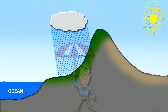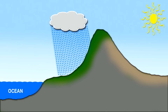The now dry air mass crosses the mountains and begins to sink on the leeward side of the range. It compresses and warms, promoting evaporation. Dry air warms one degree Celsius per 100 meters of elevation drop.